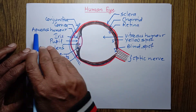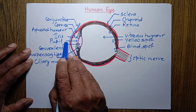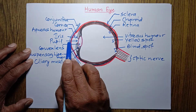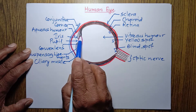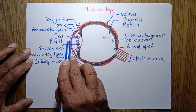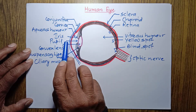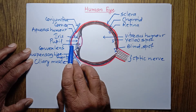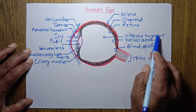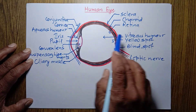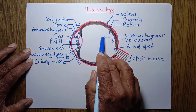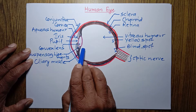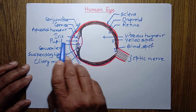Aqueous humor — the aqueous humor is a watery liquid, and it is filled between the lens and the cornea. Vitreous humor is jelly-like, whereas aqueous humor is a watery liquid.